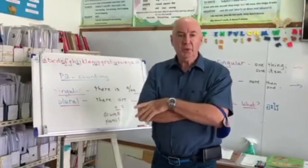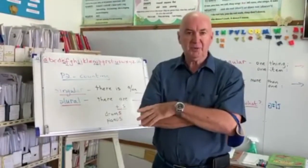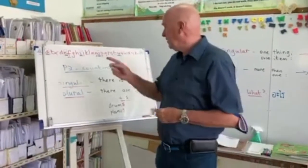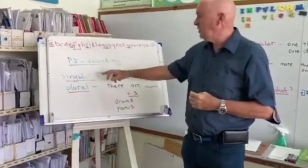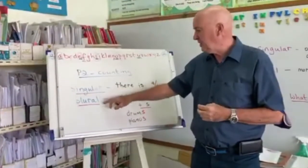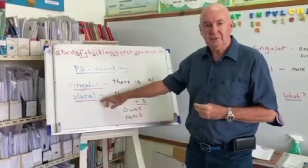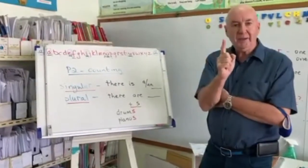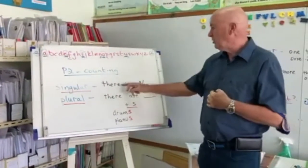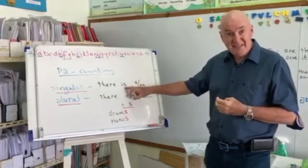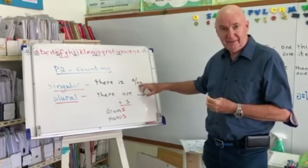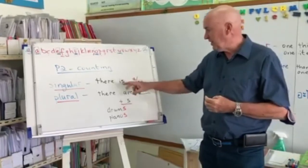To do the worksheets for this week, you need to remember two things. First of all, you need to remember singular and plural. Singular is when we have one thing, and so we would use there is and then a or an. One thing, singular, there is.